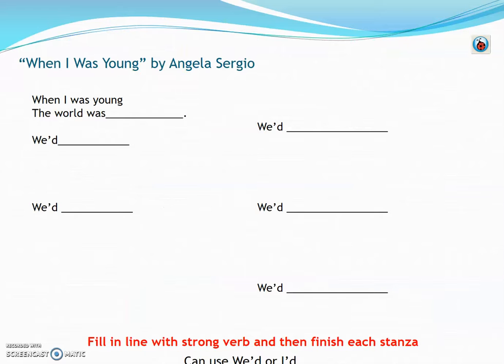The next step is to take those memories and that location and format your poem similarly to what you read — including the original When I Was Young poem and the three examples. Your poem is going to follow the structure on the screen: it starts with 'When I Was Young, The World Was' followed by your location. That could be 'When I Was Young, The World Was Dagan Road,' 'Spring Avenue,' or 'My Grandma's House.' Each stanza will then cover some memories from that one location.